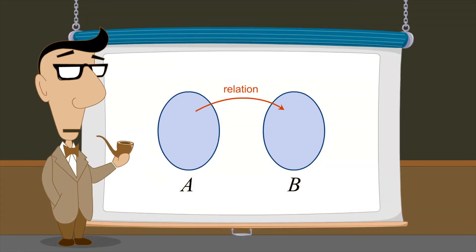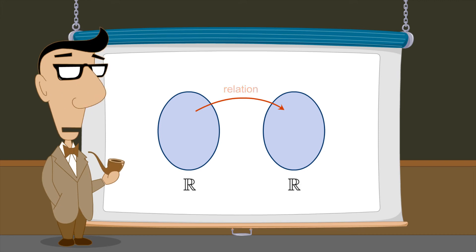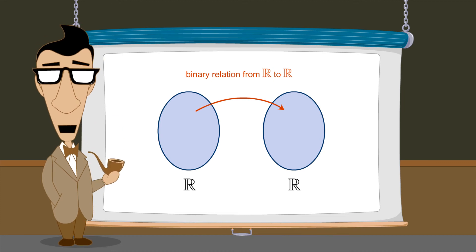We have illustrated binary relations between sets containing various types of elements but often in algebra the sets which are related are both equal to the set of real numbers R. In this case, we can either say that the binary relation is from R to R or more simply, that the binary relation is on R.